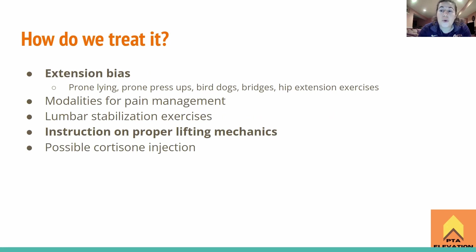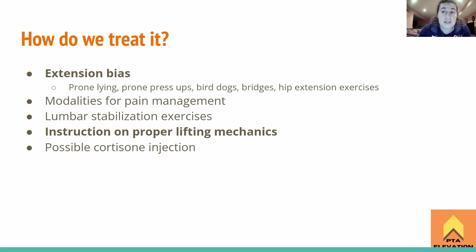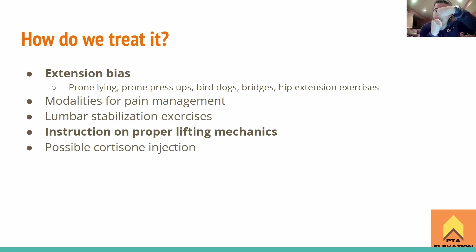How do we treat a patient who has a herniated disc? With a herniated disc patient, we're going to have an extension bias. It might not be a strong extension bias — they might just prefer a neutral spine — but a lot of these patients are going to like being in a prone position: prone pressure, prone press-ups. That's like doing a half push-up while keeping your hips on the table. This exercise can actually help push the disc back into place.